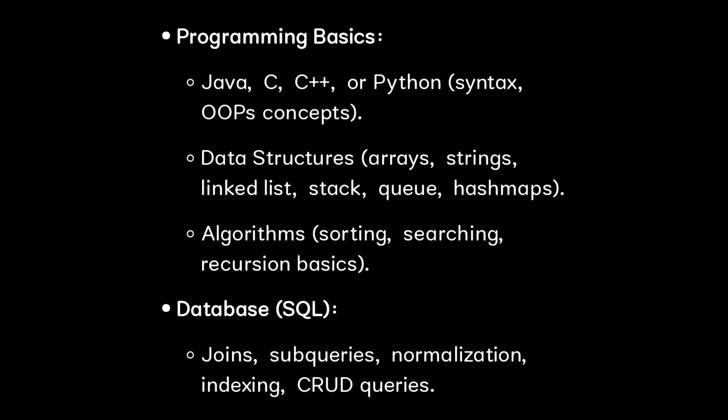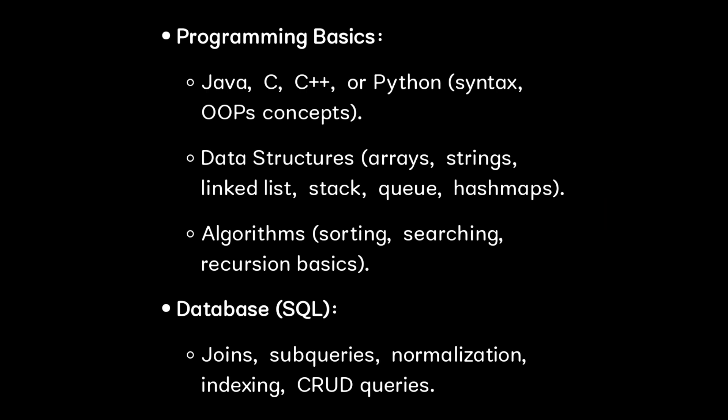You need to prepare according to your cluster. For programming basics, Cognizant only has three programming languages: Java, C#, and Python. For data structures, you need to cover array, string, linked list, stack, queue, and hash map — most questions will be based on array and string. For algorithms, they will ask bubble sort and merge sort — past candidates who attended in June mostly received these kinds of questions.